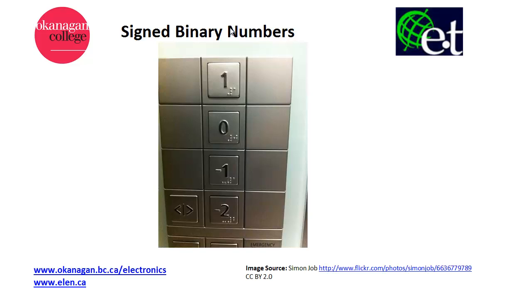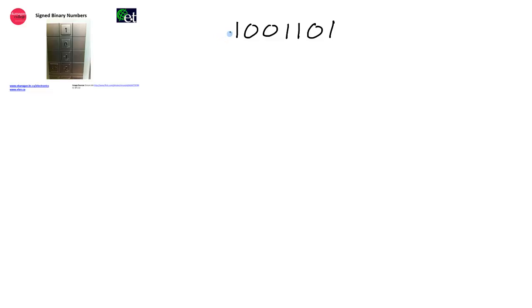In this video, I'm going to show you a few different ways to represent signed binary numbers. If we were only concerned about written number systems, we could simply use the same format as we do for decimal numbers and put a negative sign in front of the number. But computers don't have the luxury of using a negative sign — we have to use bits to represent whether a binary number is positive or negative.